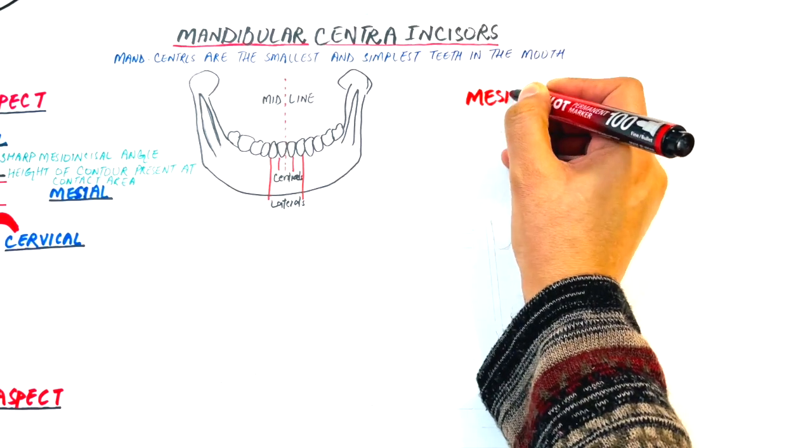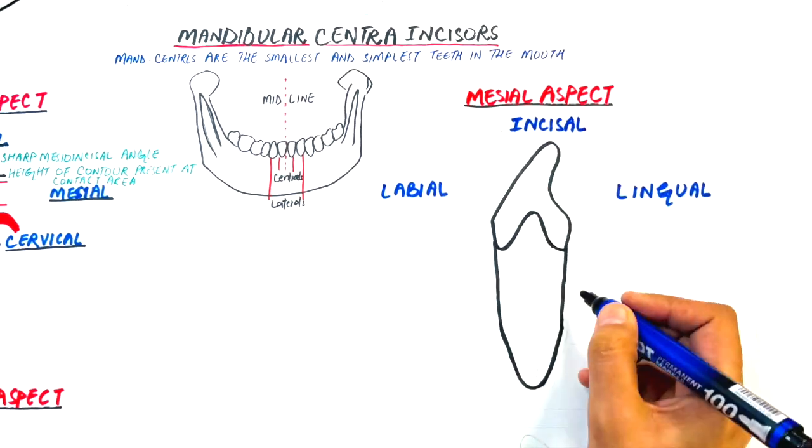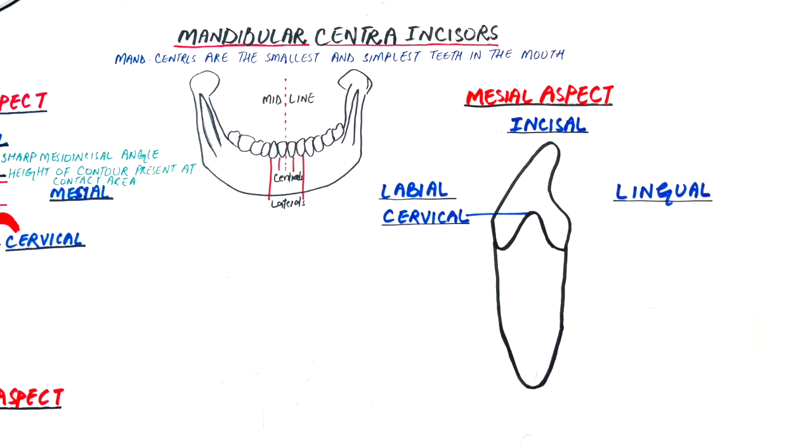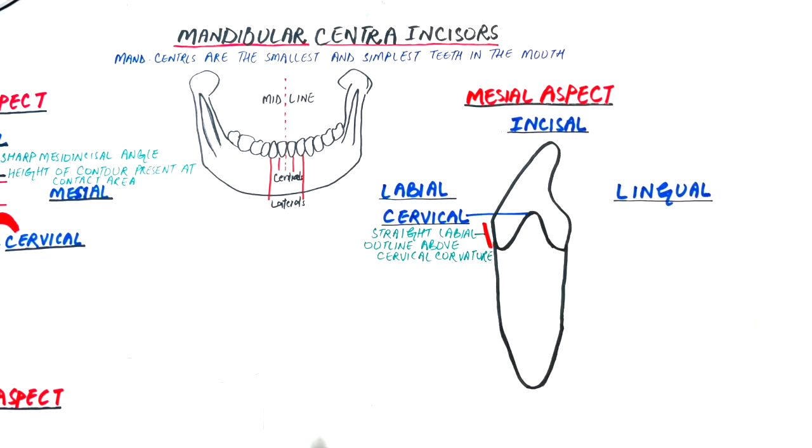Mesially, the tooth has a labial, a lingual, cervical, and incisal outlines. The labial outline is straight above the cervical curvature, sloping rapidly from the crest of curvature to the incisal ridge.